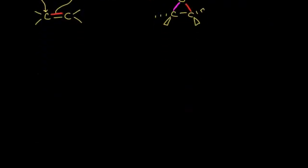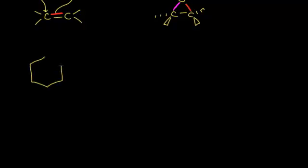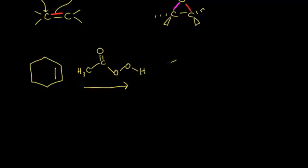If we start with cyclohexene and add peroxyacetic acid — which is based on acetic acid but has one extra oxygen — we're going to form an epoxide: a three-membered ring including oxygen. The oxygen adds to the top face of our ring, so we draw the epoxide using wedges, with the hydrogens going away from us. That's the epoxide that forms using the mechanism described above.